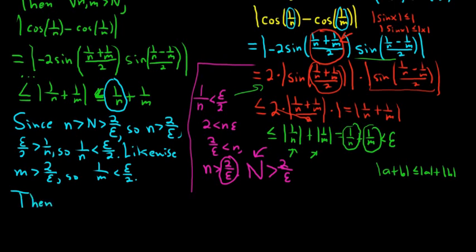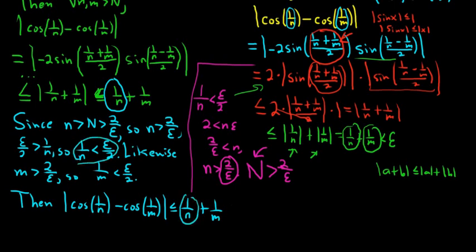So then, let's just rewrite it again. Cosine of 1 over n minus cosine of 1 over m. We know this is less than or equal to, skipping some of the steps we already did, 1 over n plus 1 over m. And then here's the new step. 1 over n, we know that's less than epsilon over 2. And then 1 over m is less than epsilon over 2. So epsilon over 2 plus epsilon over 2 is equal to epsilon. And the proof is complete. We have shown that the cosine of 1 over n is a Cauchy sequence. That's it. Thanks for watching.